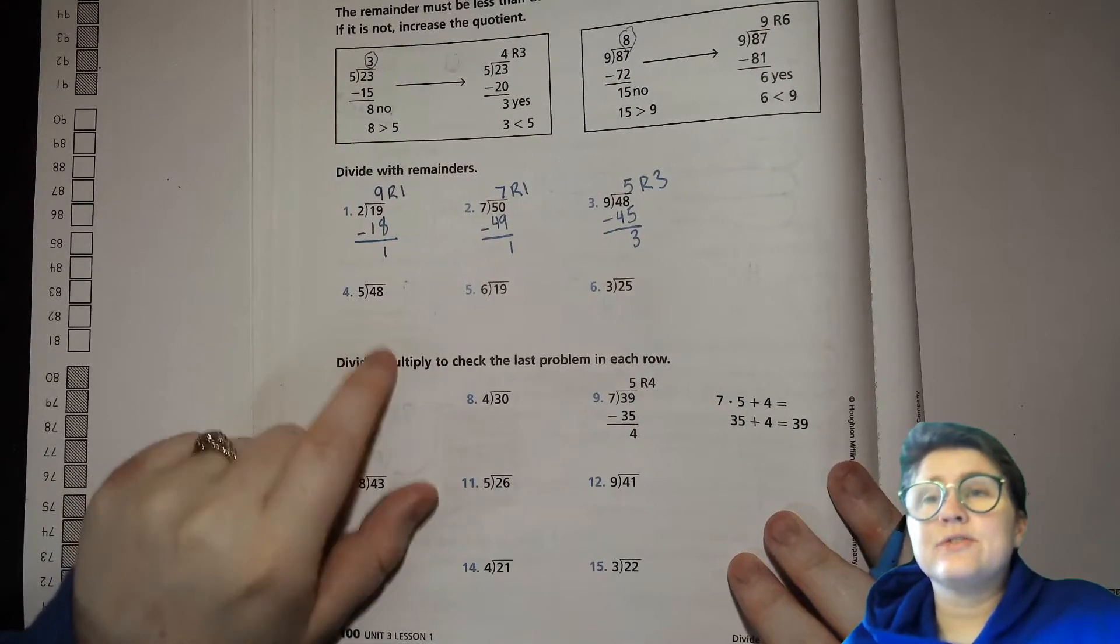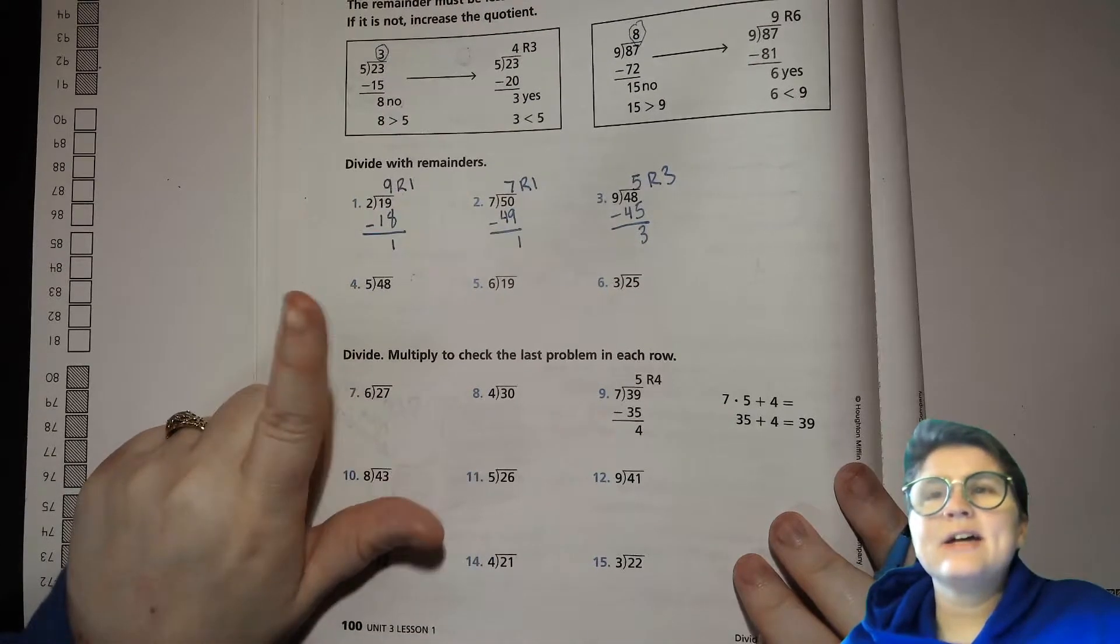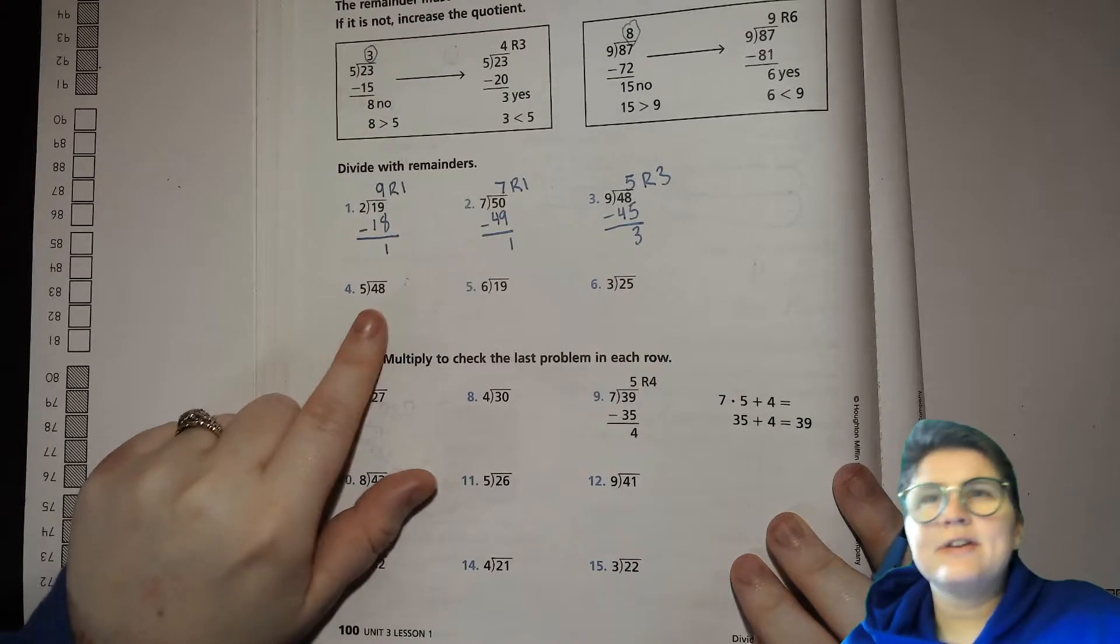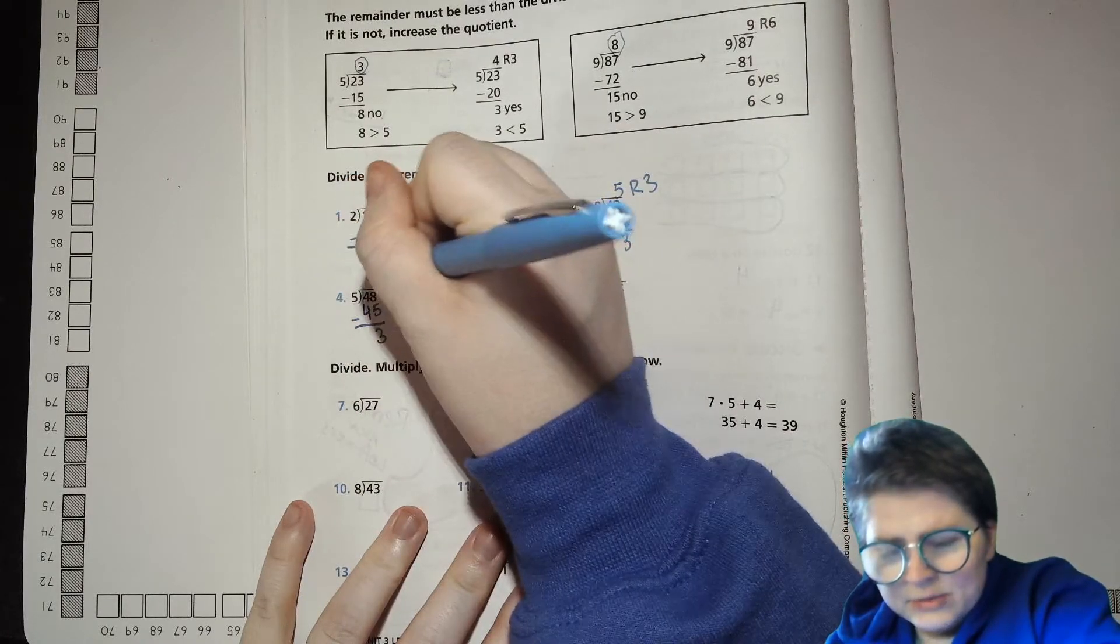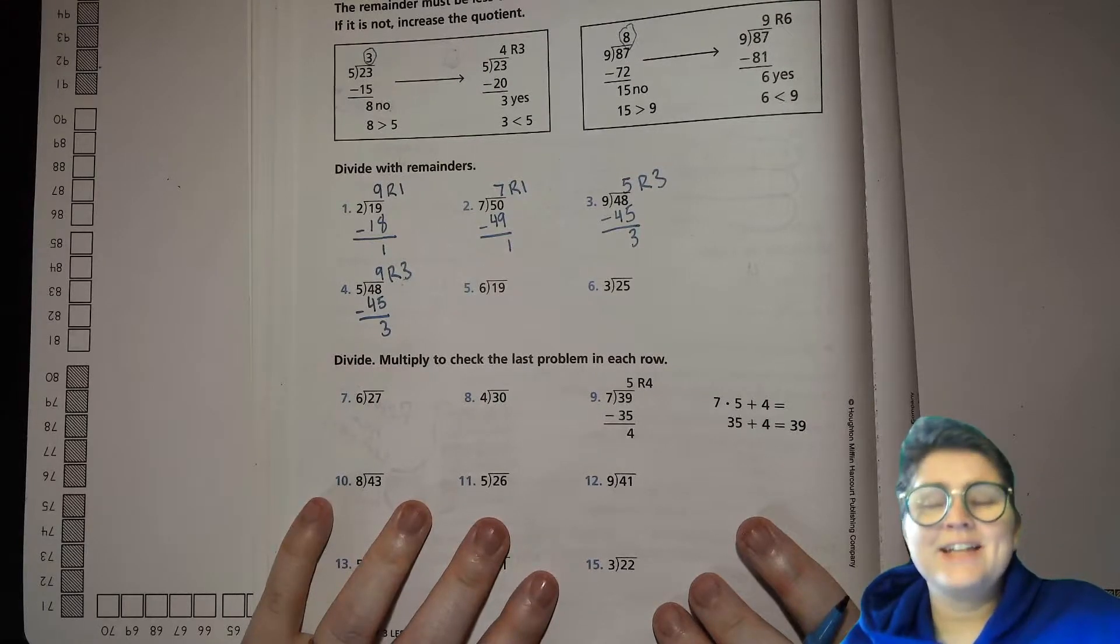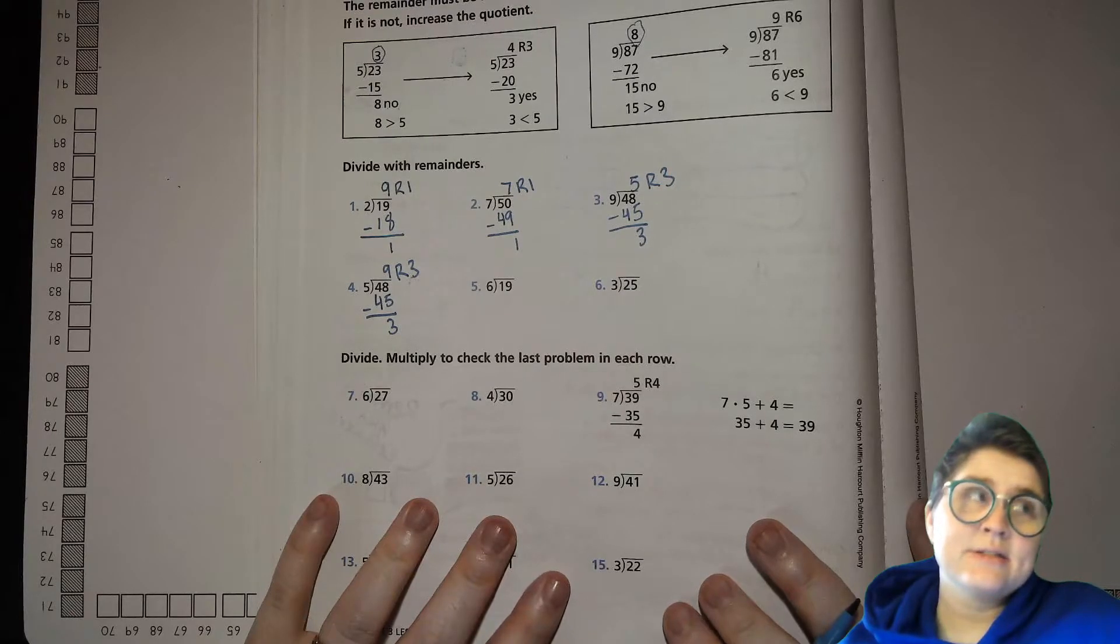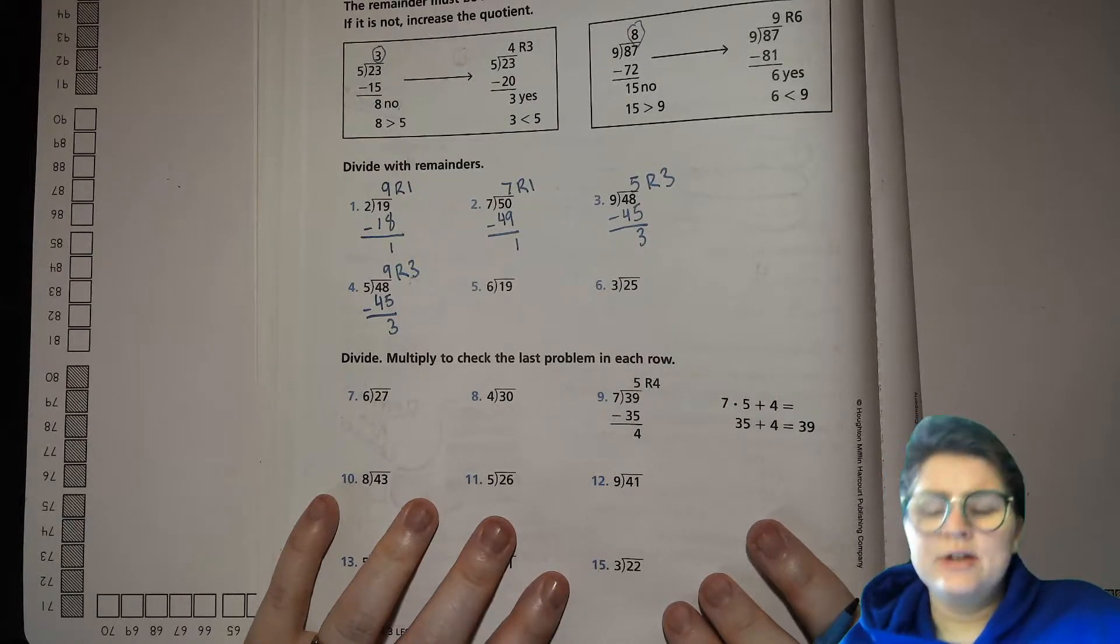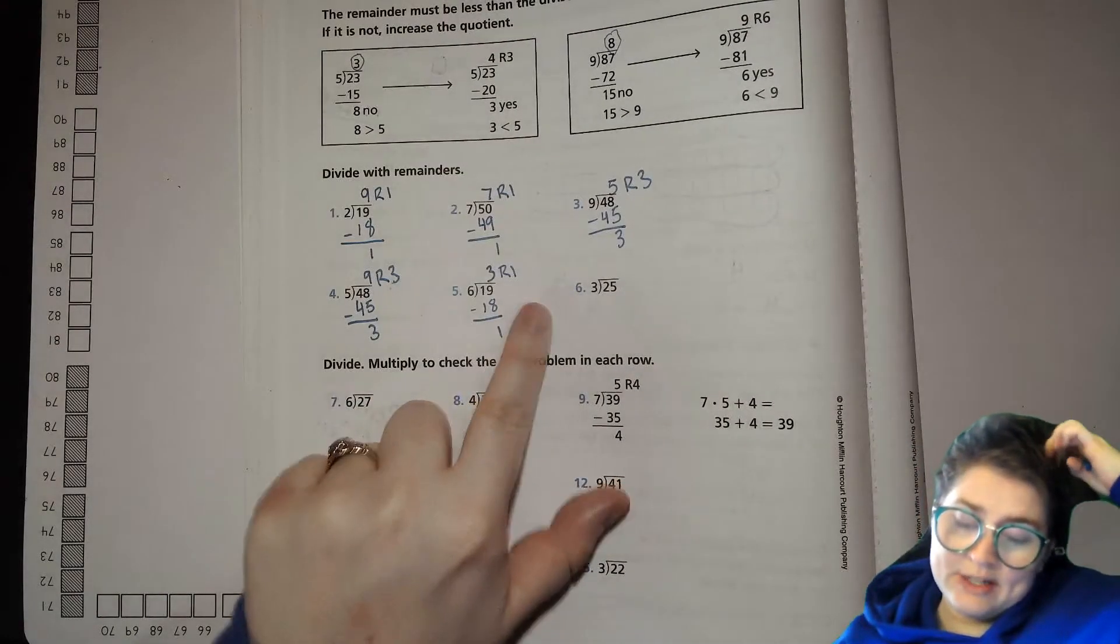5 into 48. How many 5s goes into 48? 5 times 10 is 50. We want something probably a little bit less than 10. Let's try 5 times 9. 5 times 9 we just talked about is 45. So, that's perfect. 9 remainder 3. Number 5. 6. How many 6s go into 19? 12. 6 times 1 is 6. 6 times 2 is 12. 6 times 3 is 18. That's very close. That's looking good. 6 times 4 is 24 which is too high. So, it has to be 6 times 3 which is what? 18. Find the difference. 1. Remainder 1. We're looking at our remainder, 1 is smaller than 6. So, that is fine.